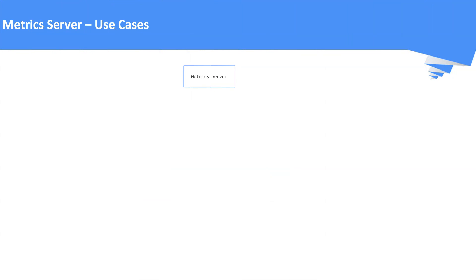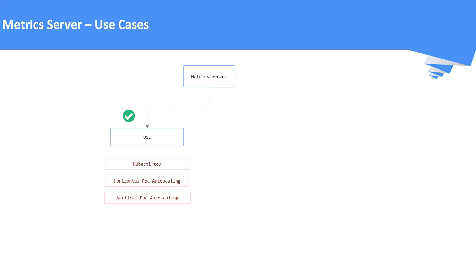So, we need to install the metrics server. As we discussed, we can use the metrics server to monitor a limited set of metrics, especially CPU and memory. Horizontal pod autoscaling, vertical pod autoscaling, and the kubectl top command are the use cases for metrics server. Metrics server is not the component for monitoring a broad spectrum of resources.